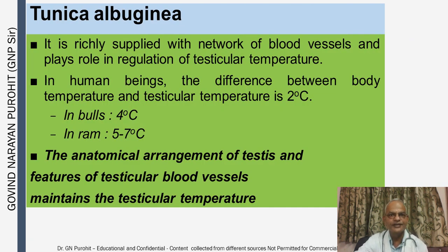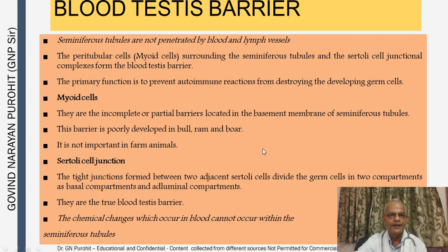The tunica albuginea is richly supplied with blood vessels and plays a role in thermoregulation. The difference between body temperature and testicular temperature is 2 degrees in humans, 4 degrees in bulls, and 5 to 7 degrees in the ram. The blood-testes barrier: seminiferous tubules are not penetrated by blood and lymph vessels. Peritubular myoid cells surrounding the seminiferous tubules and Sertoli cell junctional complexes form the blood-testes barrier. Its primary function is to prevent autoimmune reactions from destroying developing germ cells. The myoid cells are incomplete or partial barriers in the basement membrane; this barrier is poorly developed in the bull, ram, and boar.